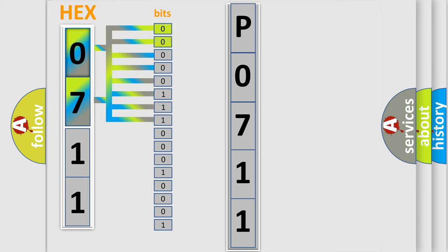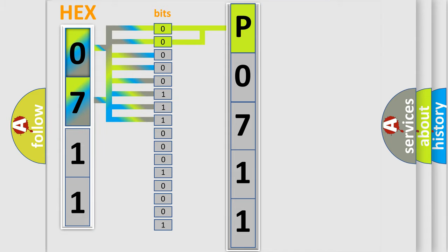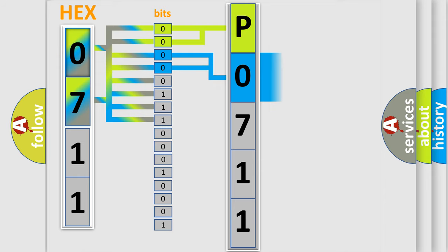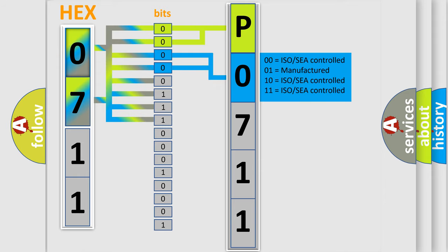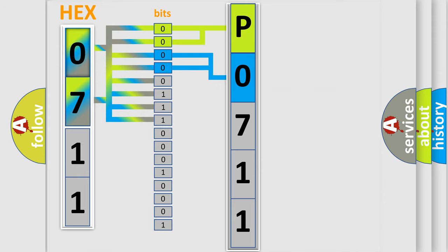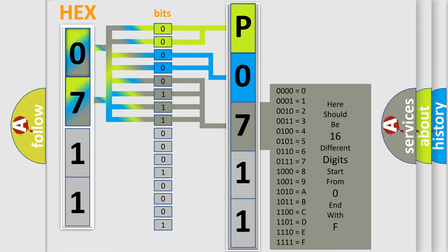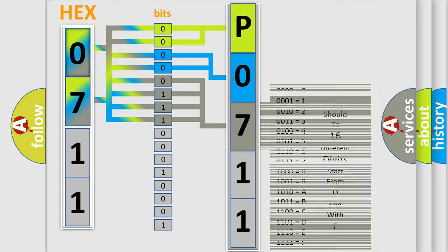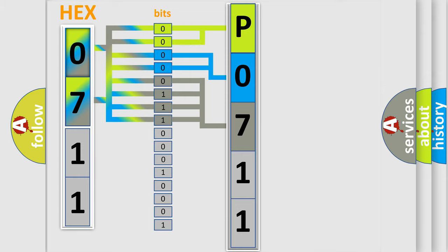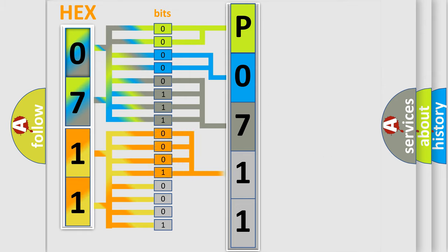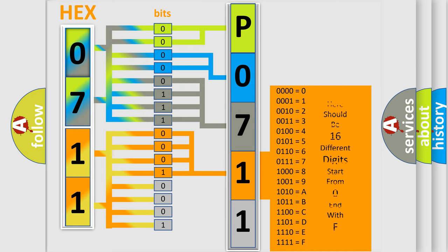By combining the first two bits, the basic character of the error code is expressed. The next two bits again determine the second character. The last bits of the first byte define the third character of the code. The second byte is composed of a combination of eight bits. The first four bits determine the fourth character of the code, and the combination of the last four bits defines the fifth character.